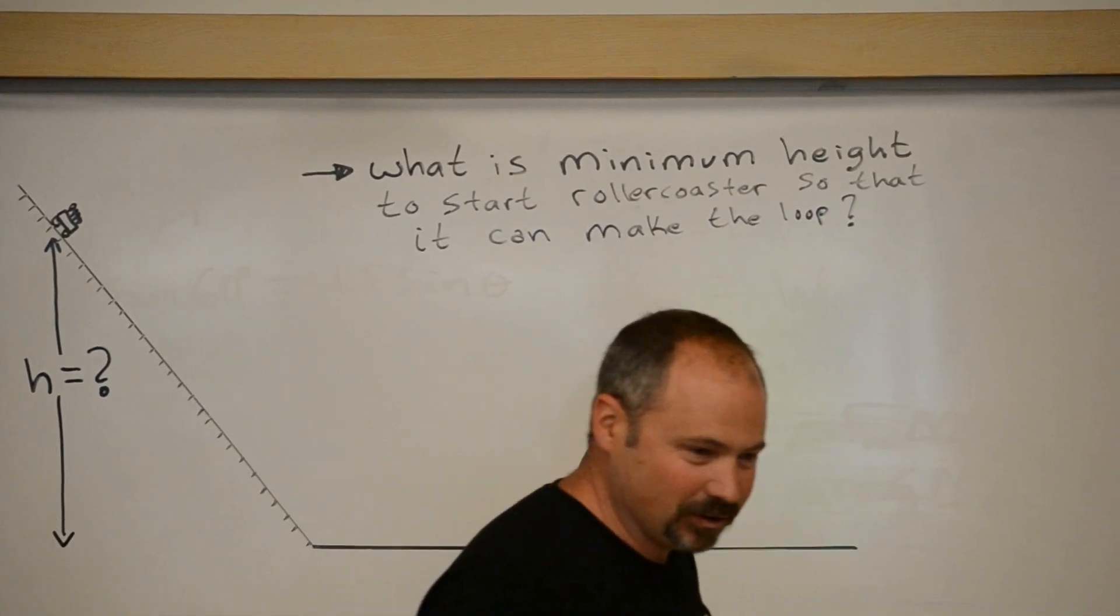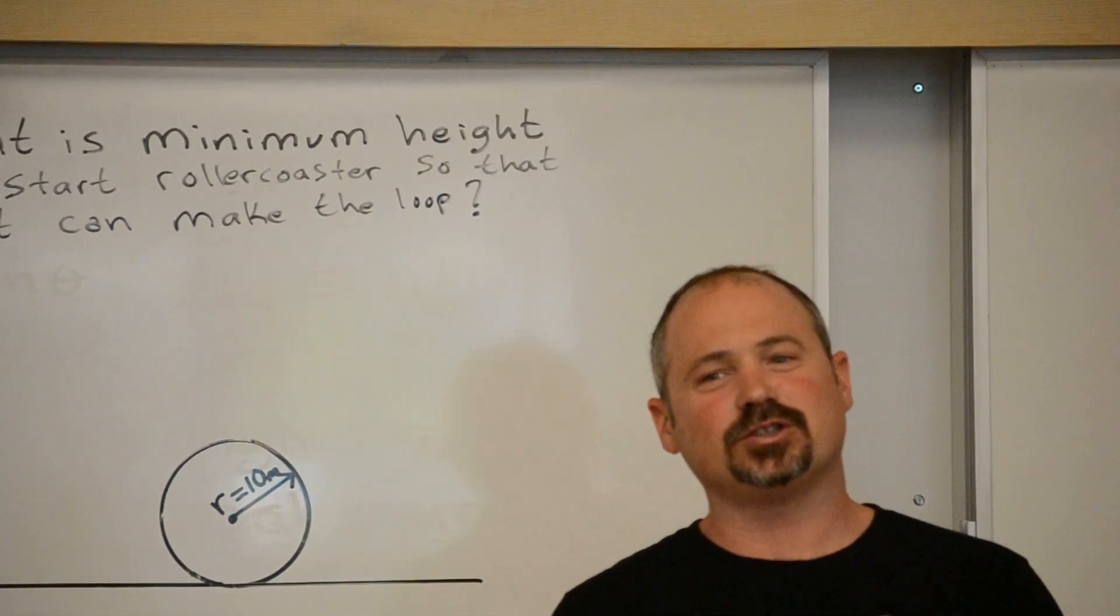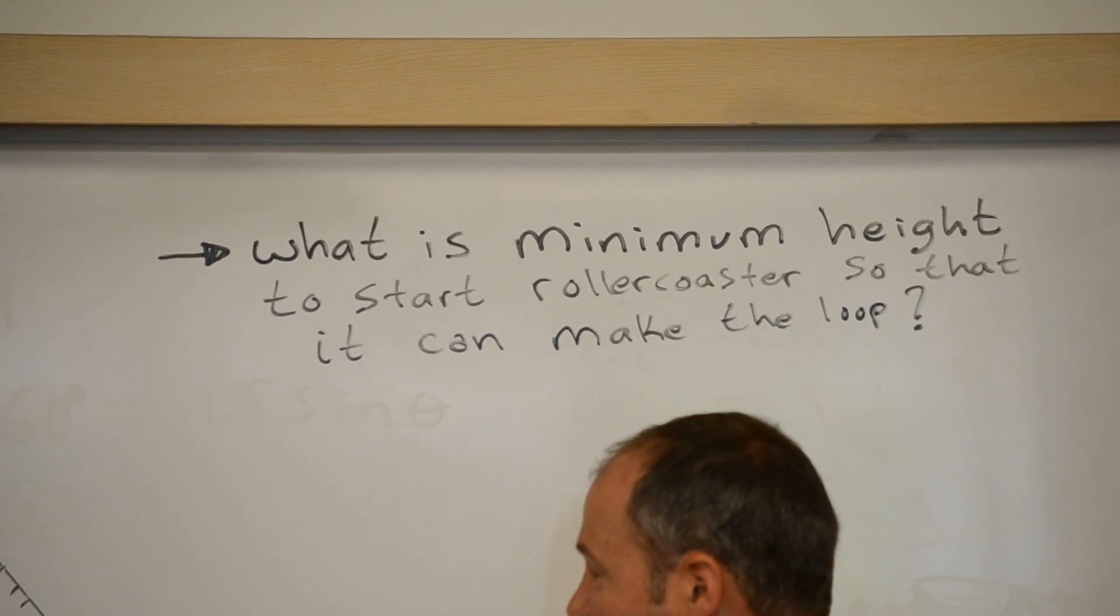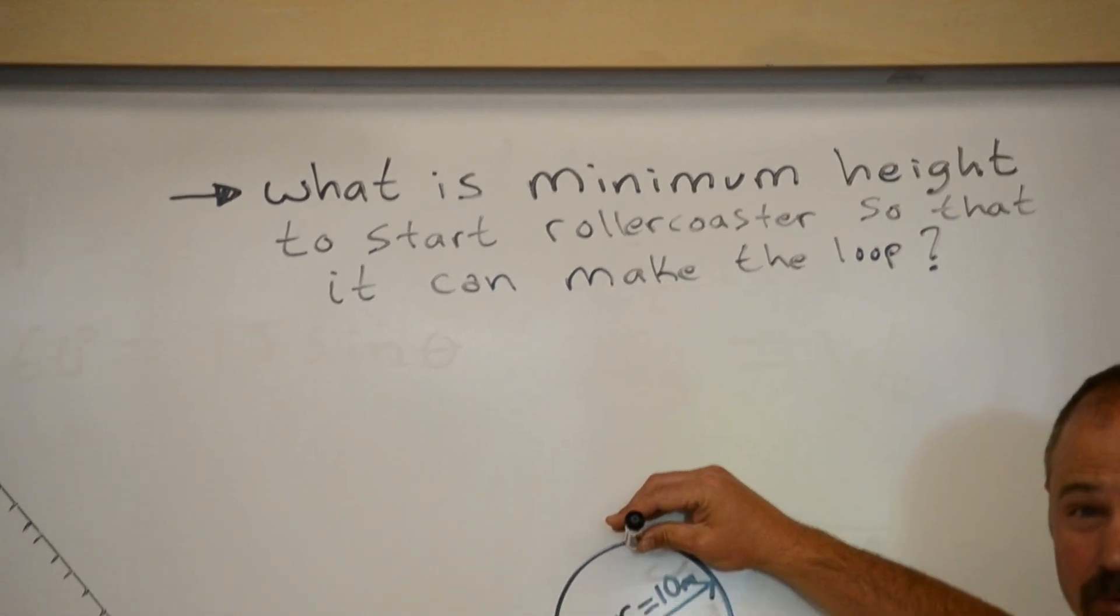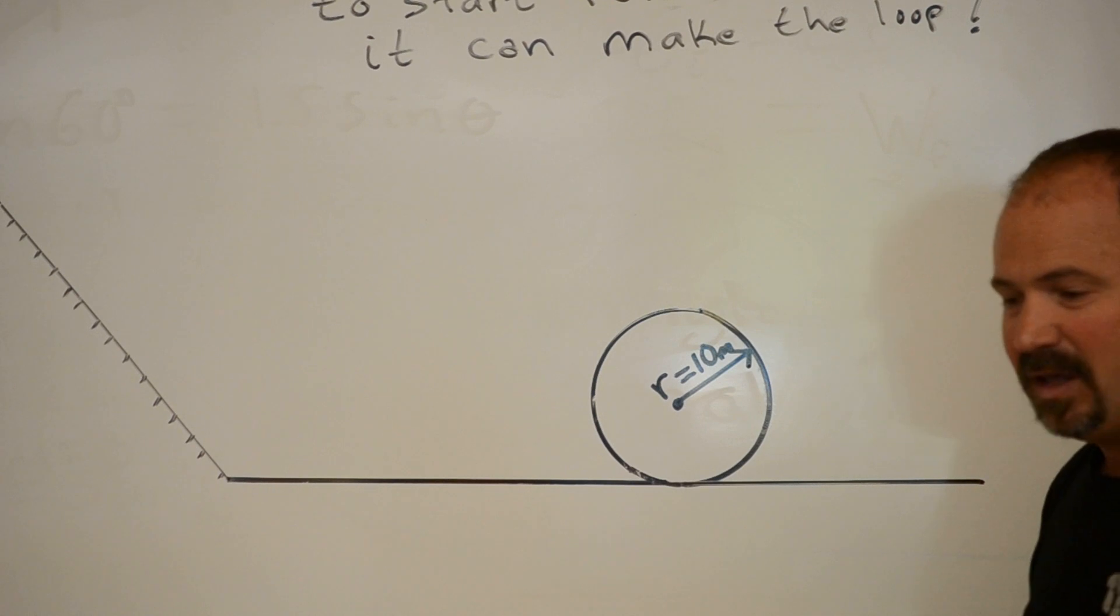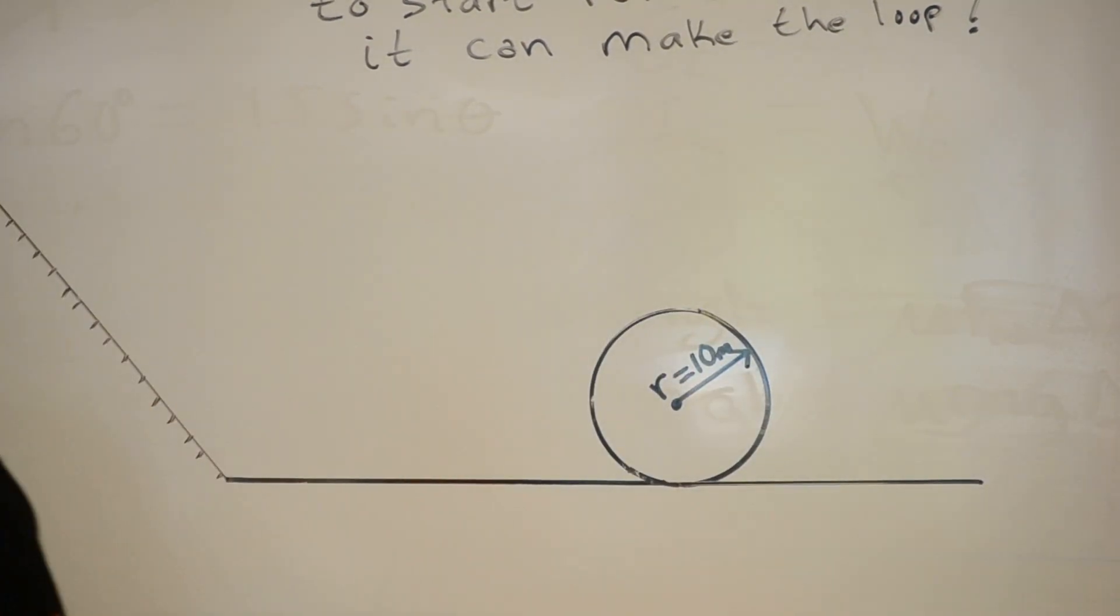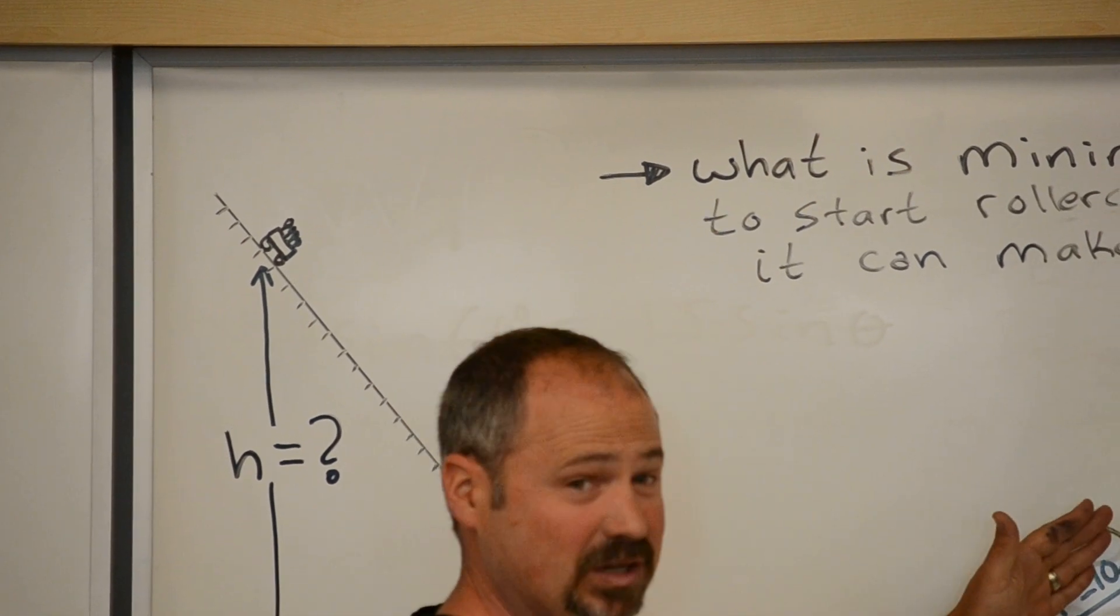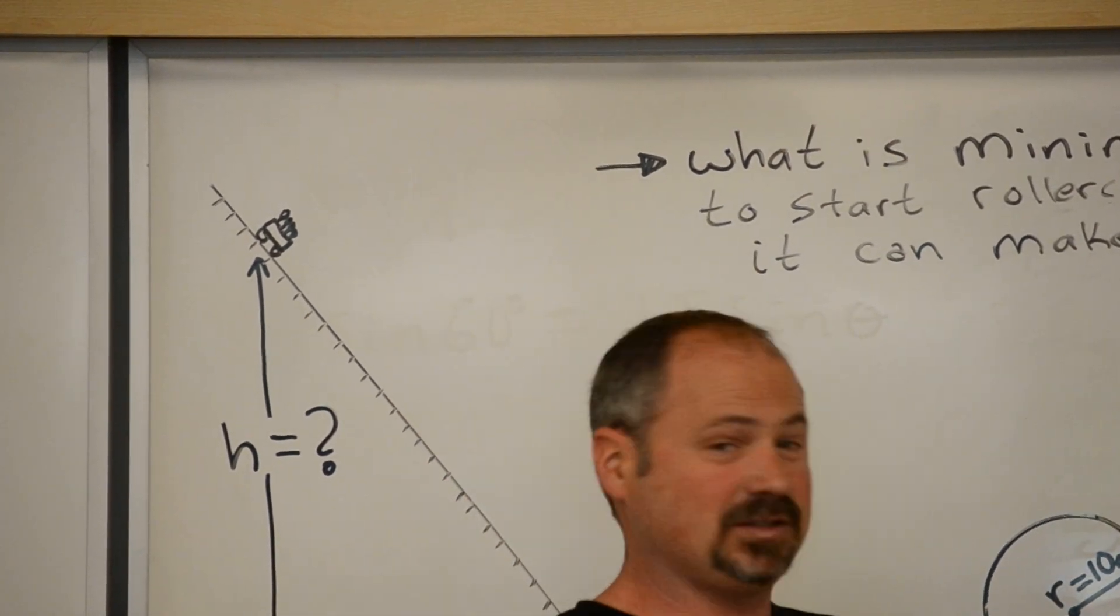When designing a roller coaster, it's very important that the passengers make the loop. For example, if you're at the top of the loop but you have zero speed, you're just going to fall down. That's why, in order to make the loop, the roller coaster has to start off much higher so that it has significant speed at the top and makes the whole loop.